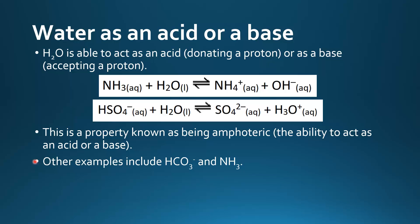Other examples of amphoteric species include the HCO₃⁻ ion (the hydrogen carbonate ion) and ammonia, NH₃.